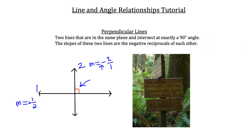An example of perpendicular lines in everyday life is this sign. The sign was nailed to the post to intersect it at exactly a 90 degree angle, which makes the sign nice and level.